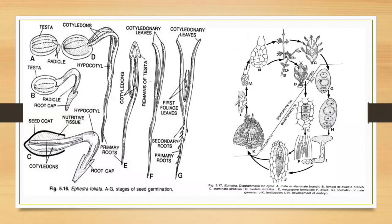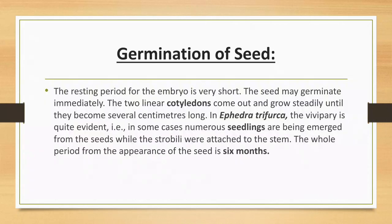Development of embryo and Germination of seed: The resting period for the embryo is very short and the seed may germinate immediately. The two linear cotyledons emerge and grow steadily until they become several centimeters long. In Ephedra, vivipary is quite evident; in some cases numerous seedlings emerge from the seed while the strobili are still attached to the stem. The whole period from the appearance of the seed to germination is about 6 months.